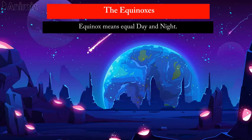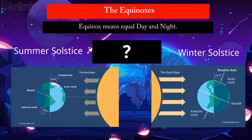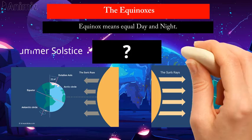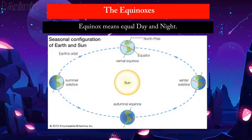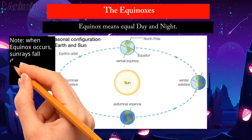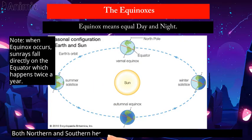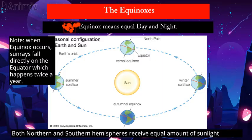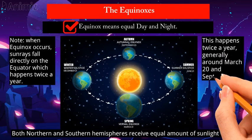Now let's talk about equinoxes. Equinox means equal day and night. Between the summer and winter solstice, the equinoxes on the earth occur. At these two positions of the earth, the sun rays are falling directly on the equator. When equinox occurs, sun rays fall directly on the equator, which happens twice a year, and both northern and southern hemispheres receive equal amounts of sunlight, giving equal day and night. This generally happens around March 20th and September 22nd.